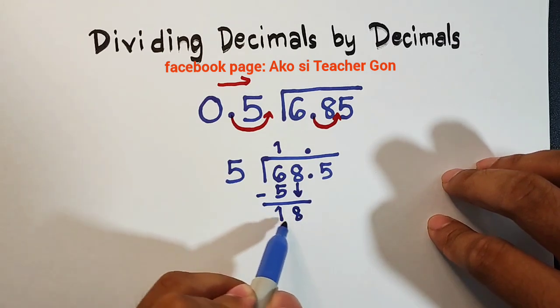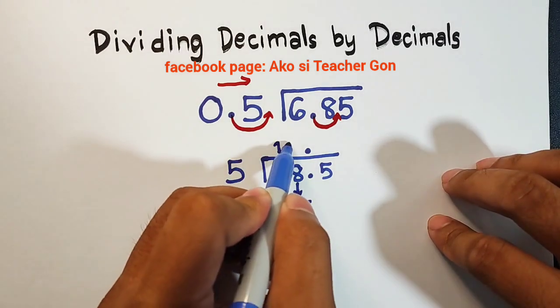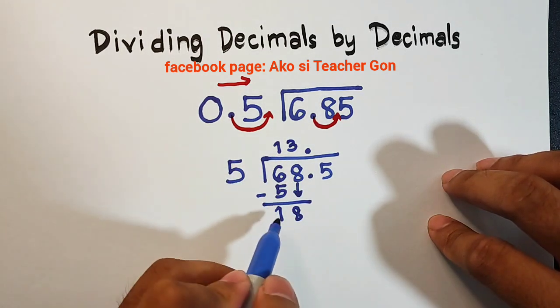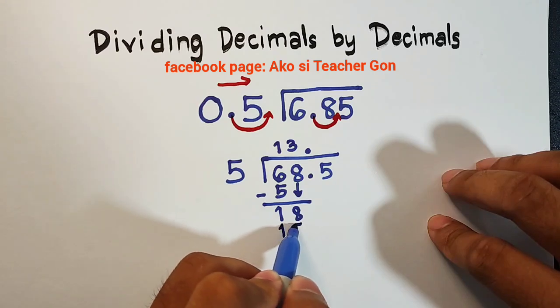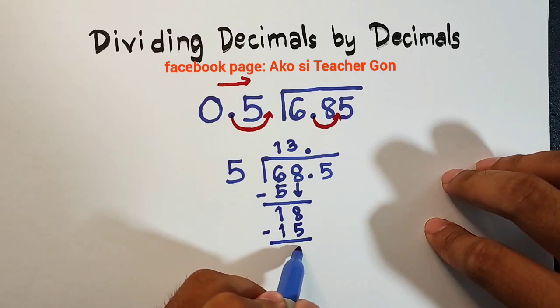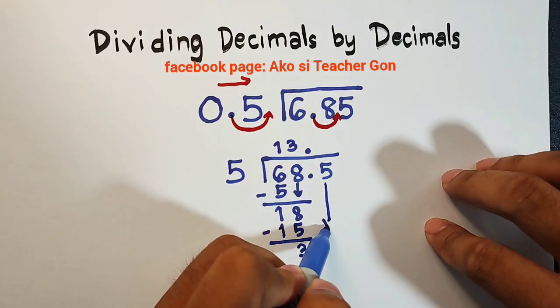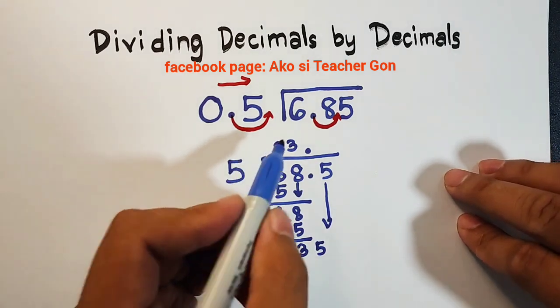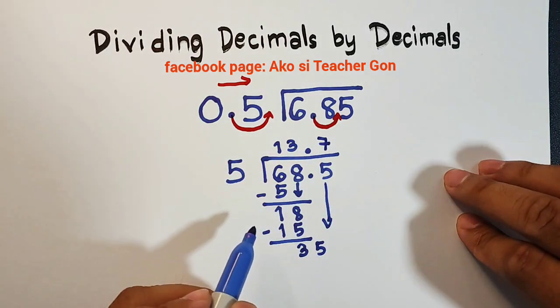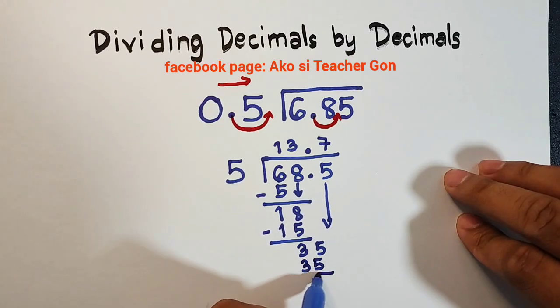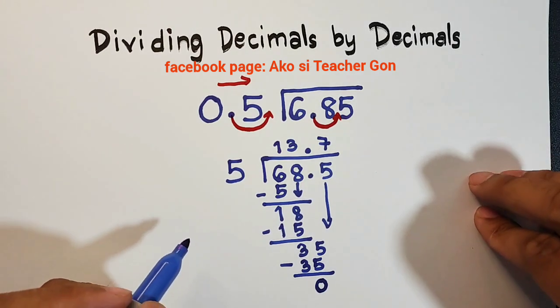Now, 18 divided by 5 is equal to 3. And 3 times 5 which is equal to 15. Subtract. 18 minus 15, we have the answer of 3. And then you need to bring down 5. So what we have here is 35 divided by 5, that would give you the answer of 7. So 7 times 5 that is equal to 35. And subtracting these numbers, this will give you 0 as your remainder.